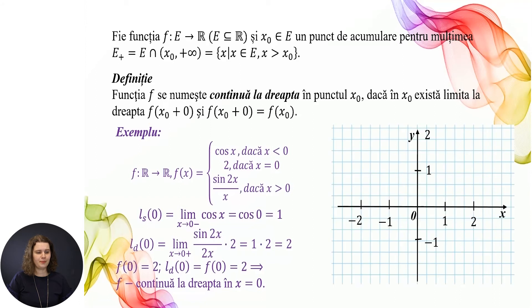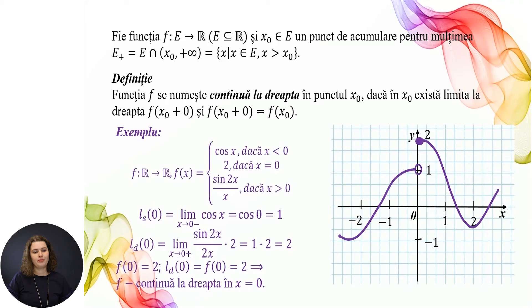Graficul funcției. Avem cosinusoida până la 0; în 0 primește valoarea 2, și dacă x > 0, avem curba sin(2x)/x. Vedem că funcția este continuă la dreapta, adică valoarea funcției în punctul 0 este egală cu limita la dreapta în acest punct.